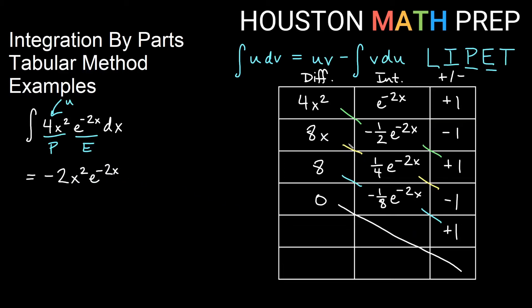Next diagonal, 8x times 1 fourth e to the negative 2x times negative 1. So I would have a negative. 8 times a fourth would be 2, so negative 2. And then I have an x and an exponential still, so x e to the negative 2x.